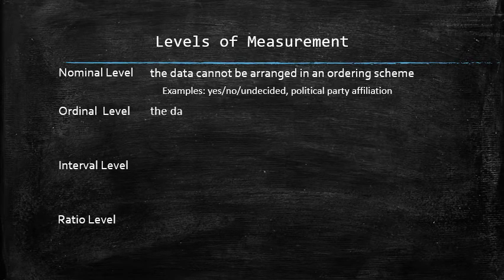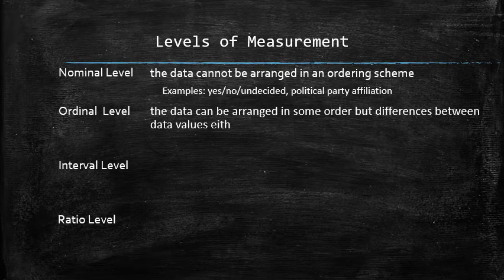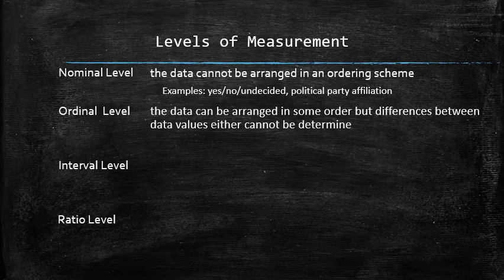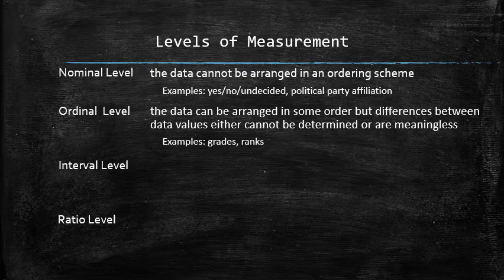The ordinal level is when the data can be arranged in some order, but differences between data values either cannot be determined or are meaningless. For example, grades and ranks. The difference between A and B is not numerical nor meaningful.